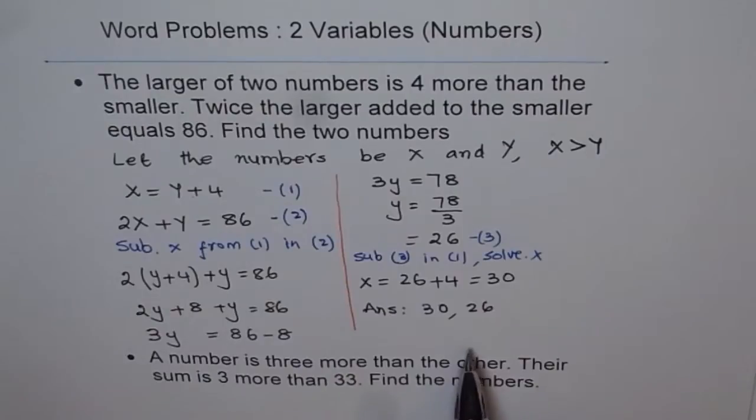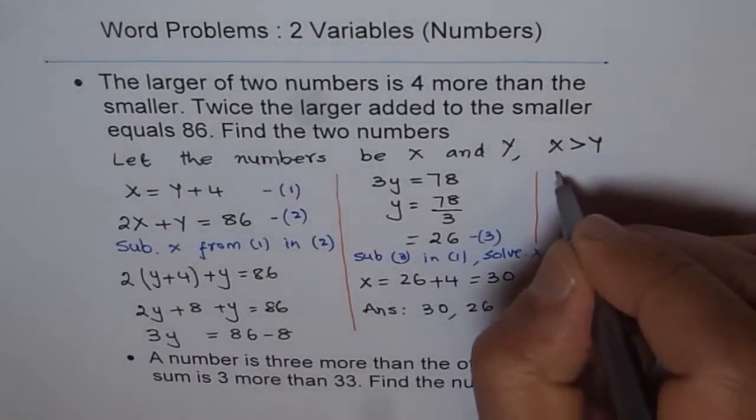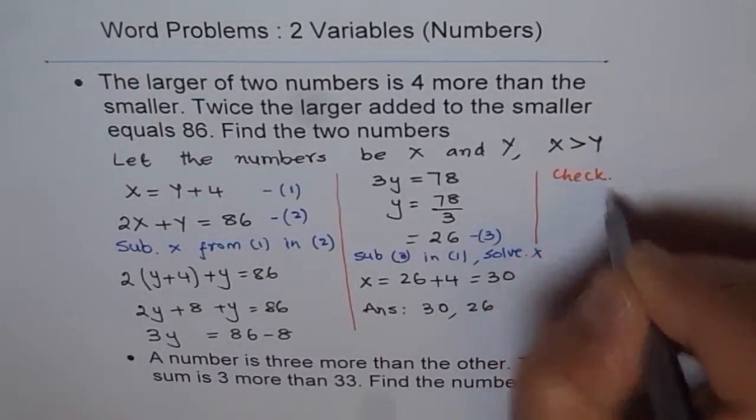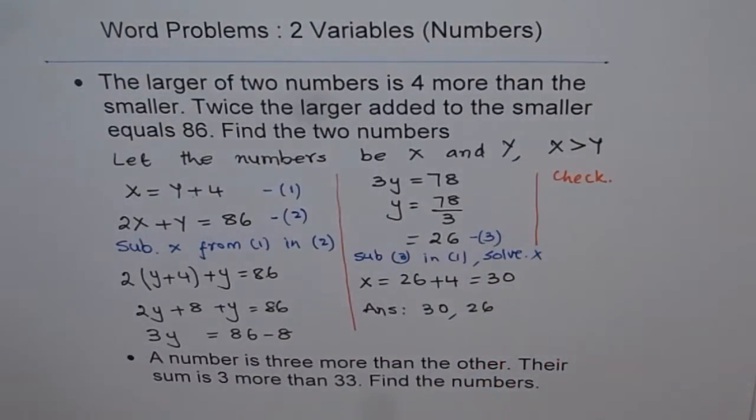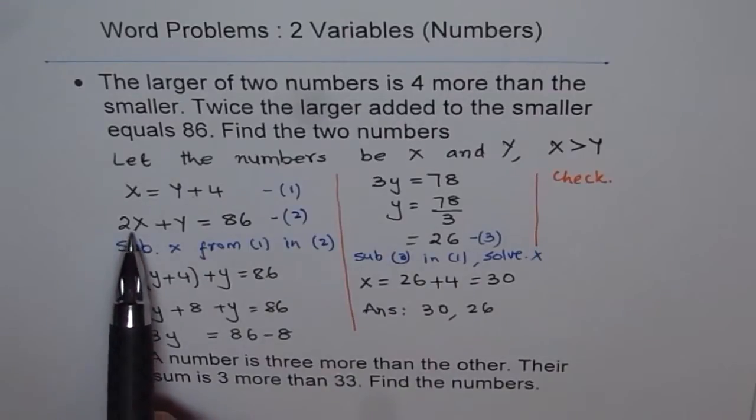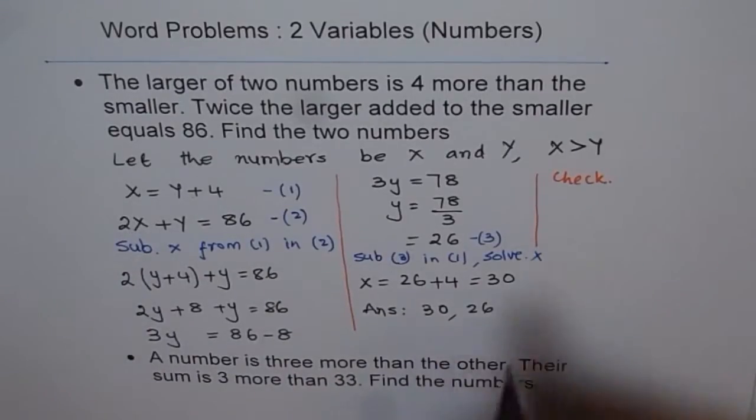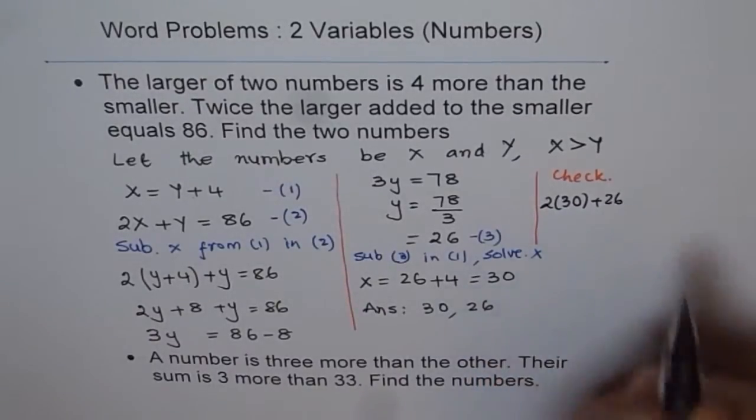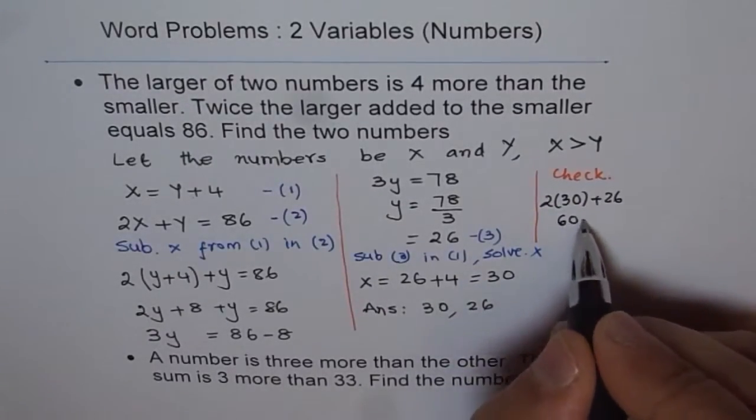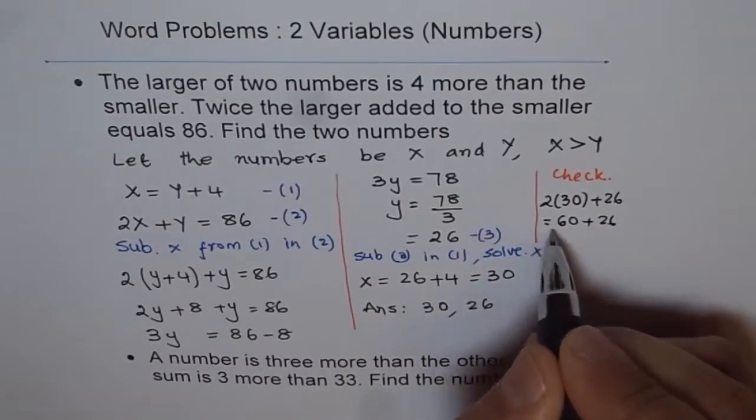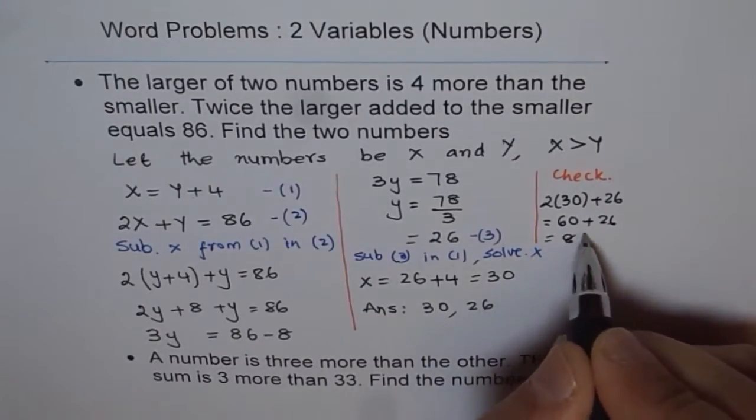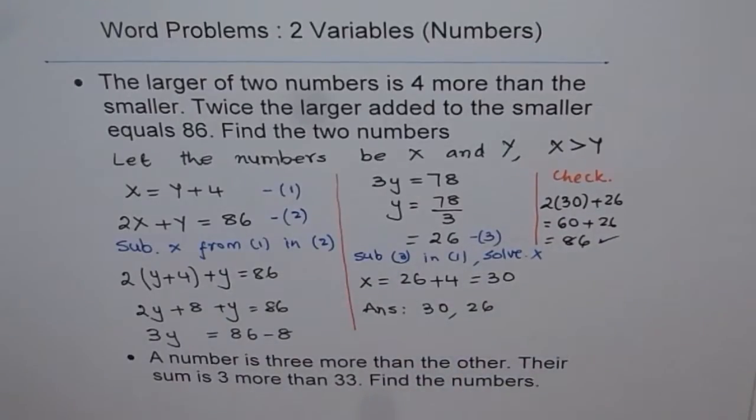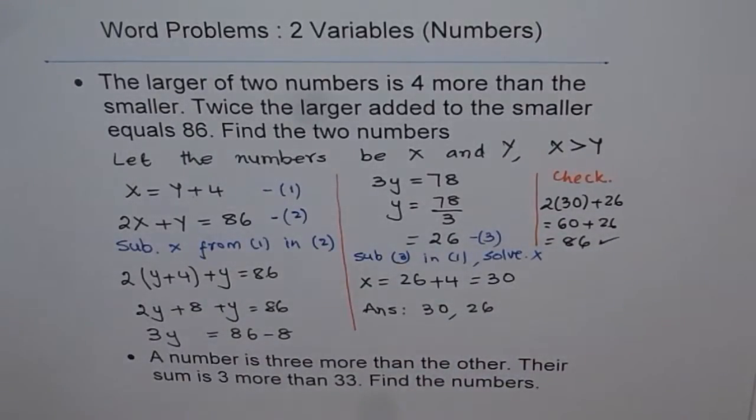Once we get the answer, it's a good practice to check your answer. So let's check it. To check the answer, you should use the second equation. Second was 2 times x plus y. So 2 times 30 plus 26 is how much? 2 times 30 is 60. 60 plus 26 is equal to 86. That is correct. So that is the kind of check you should be doing.